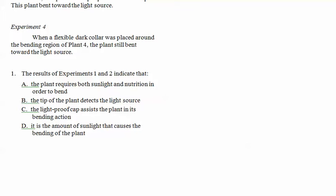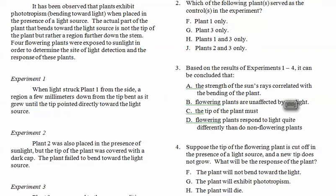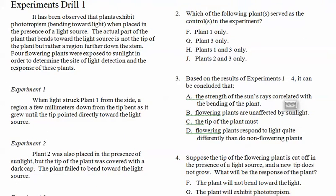So results of experiment one and experiment two indicate that the plant requires both sunlight and nutrition in order to bend. Well, no, I don't know what that even means. The tip of the plant detects a light source. Yeah, I read that. Lightproof cap. No, didn't do anything like that. Is the amount of sunlight that causes a bending plan? No, just light in general. Which of the following plants serves as the control? What do we not do anything to? What do we just leave alone? Plant one. They're the ones we messed with.